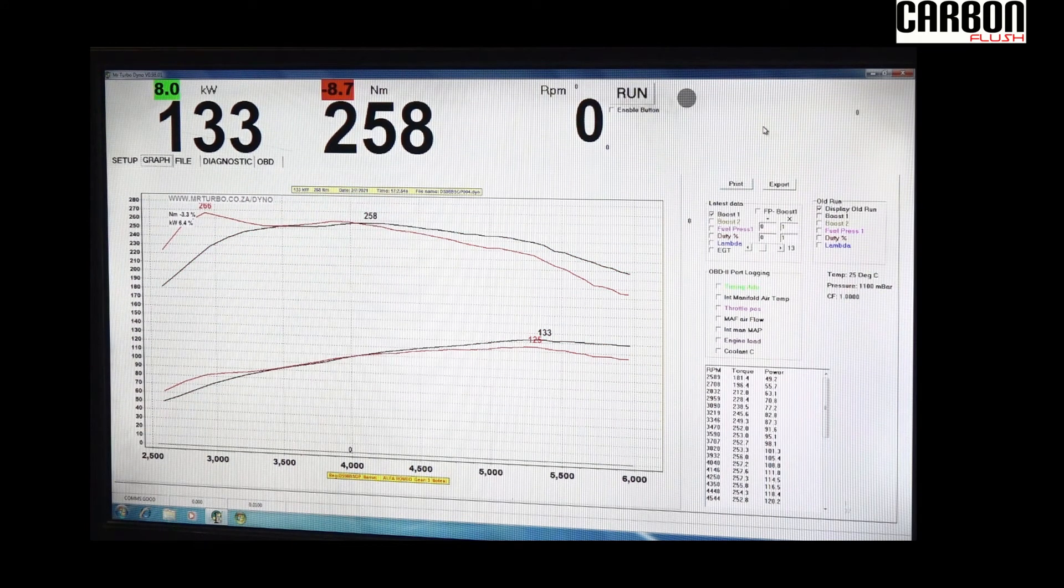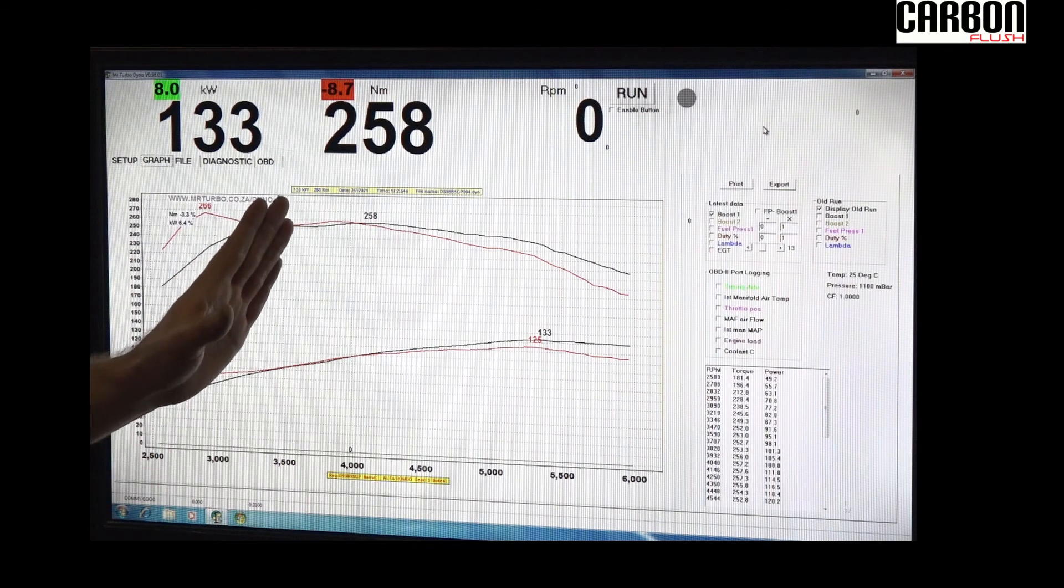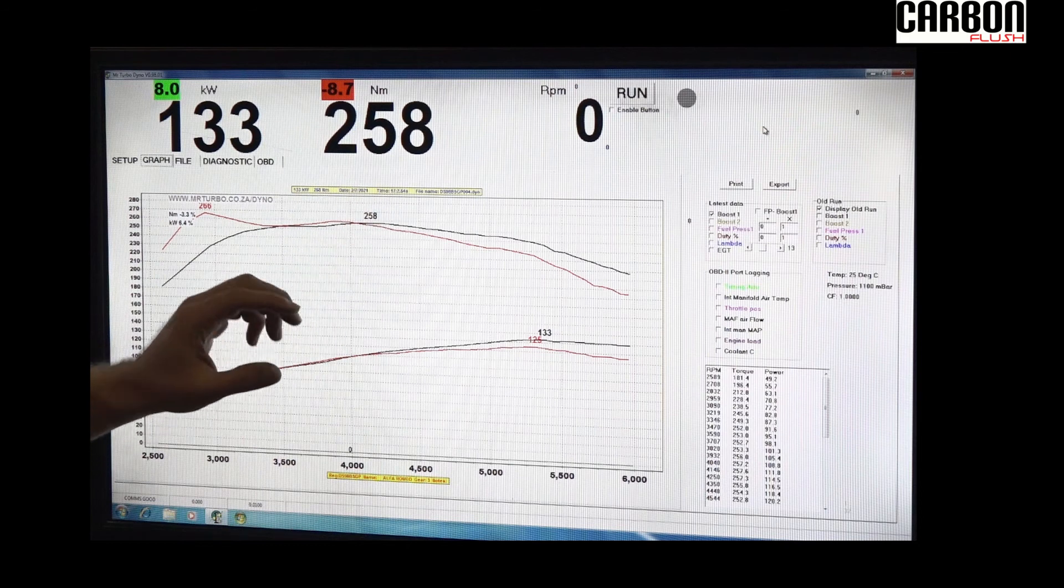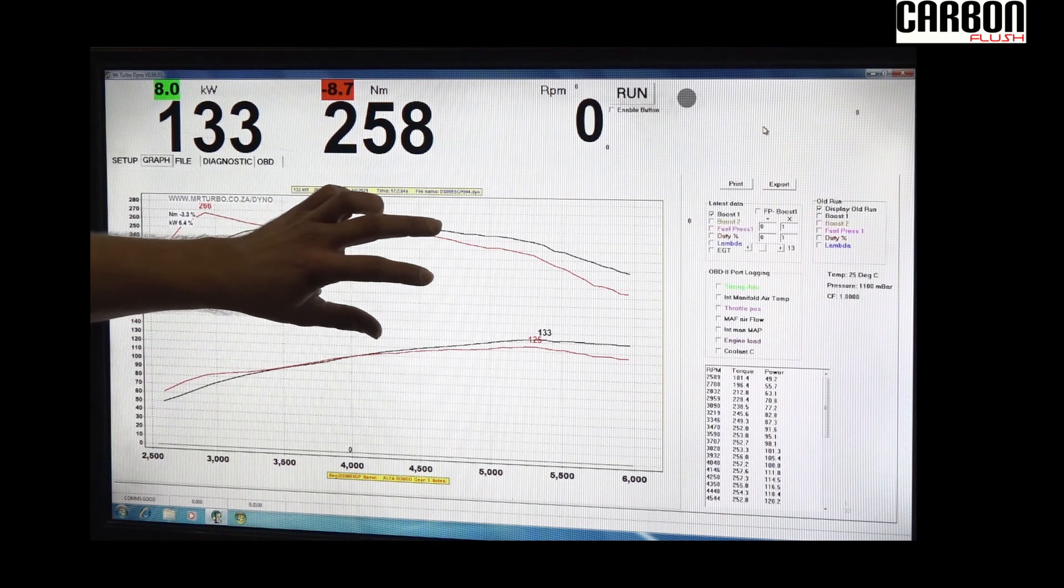Here we have the overlay of the before and after run. You can see at higher RPM, 4200 plus RPM, it starts gradually increasing in power.